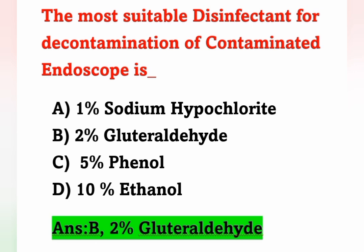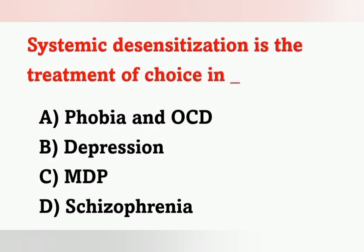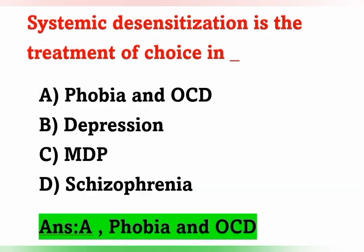Next question: Systematic desensitization is the treatment of choice for which of the following? Options: A) Phobia and OCD, B) Depression, C) MDP, D) Schizophrenia. Systematic desensitization is used for the treatment of phobia and obsessive compulsive disorder. Option A is the correct answer.